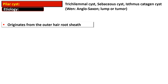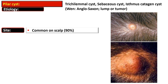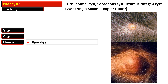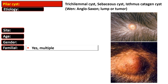Pilar cysts are considered to originate from the outer hair root sheath. They are commonly found on the scalp — about 90% of lesions are present on the scalp. They affect middle-aged individuals and females are most commonly affected.